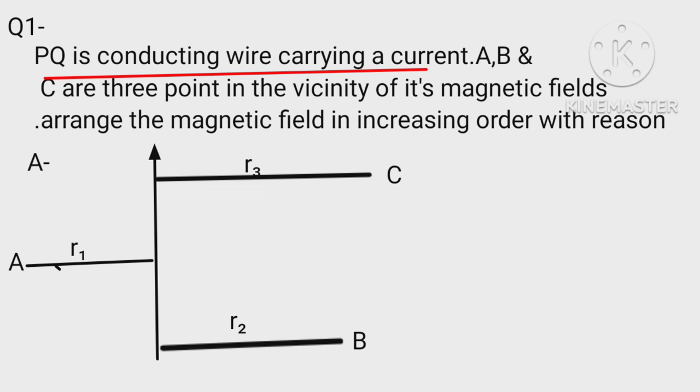PQ is a conducting wire carrying a current. A, B and C are three points in the vicinity of its magnetic fields. Arrange the magnetic field in increasing order with reason. Since B is inversely proportional to r, therefore B3 less than B2 less than B1.